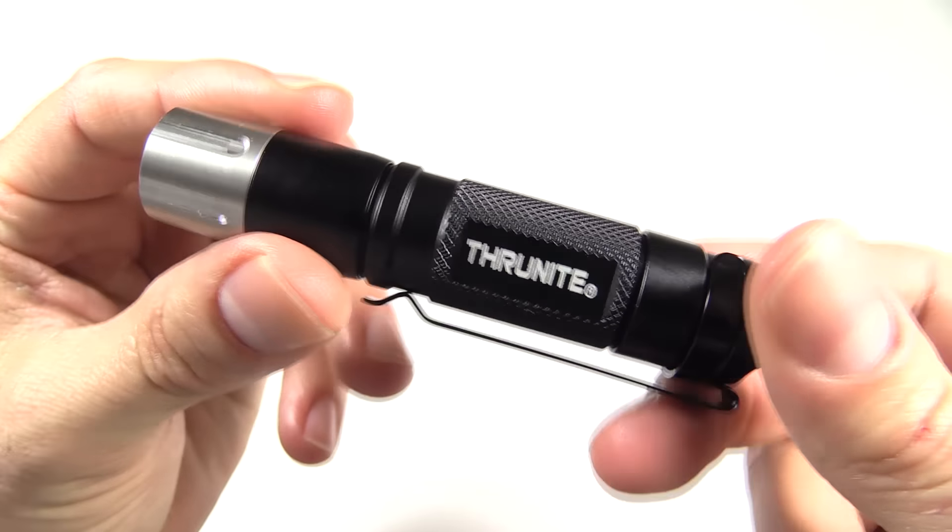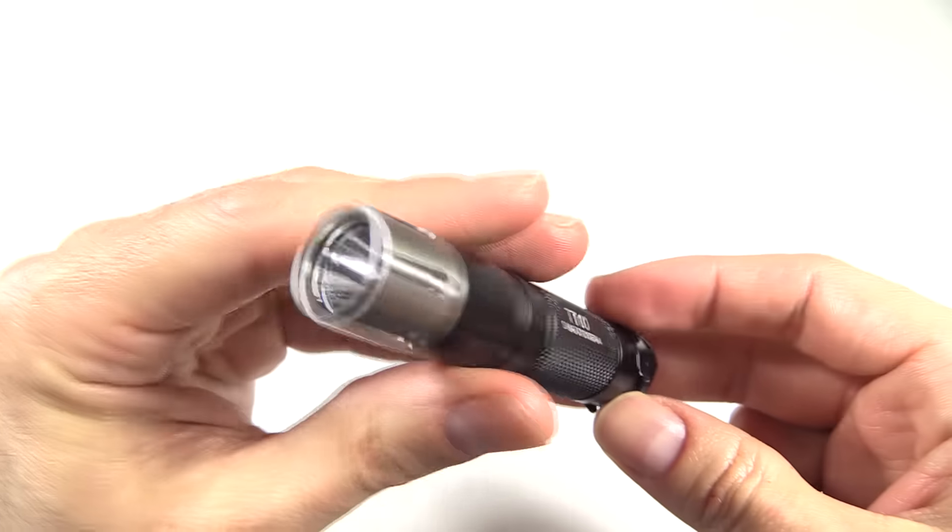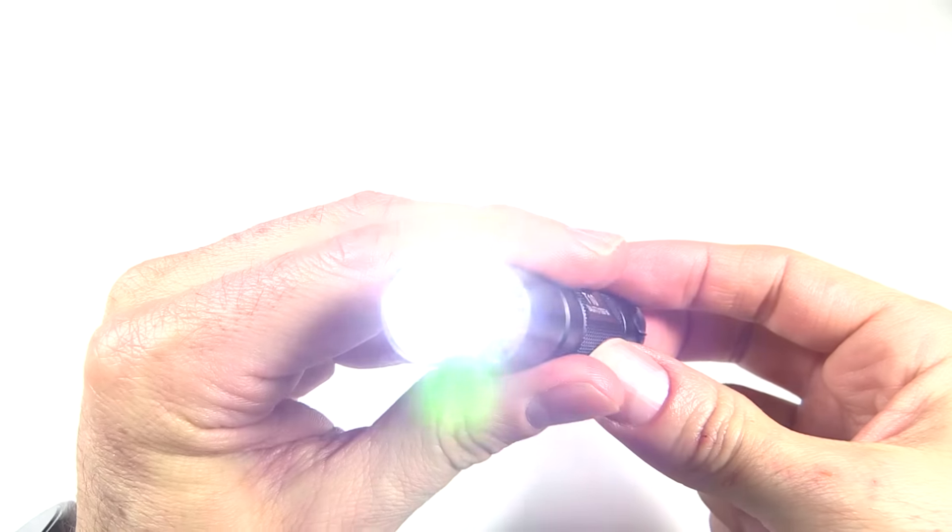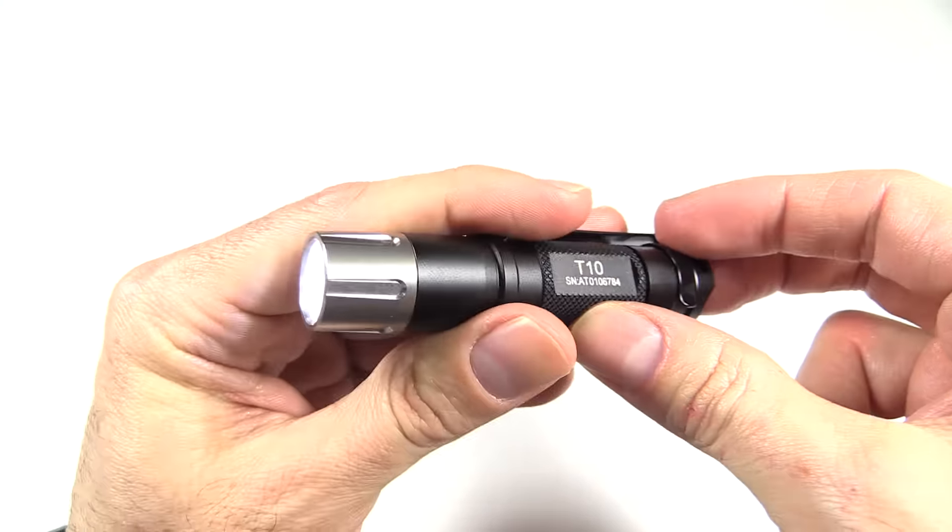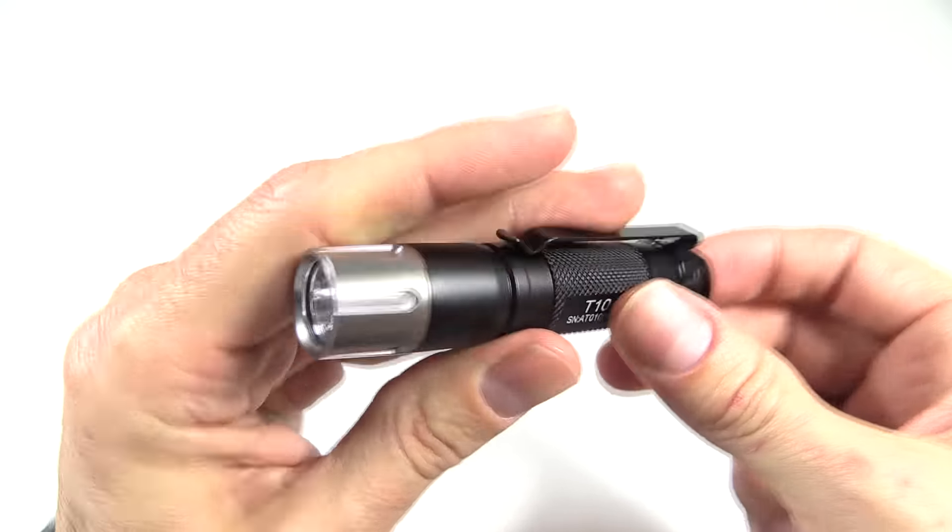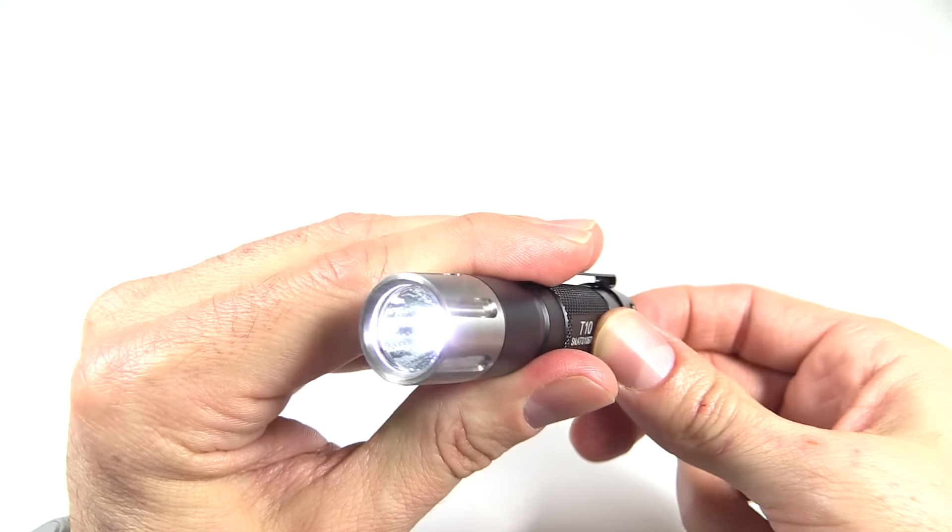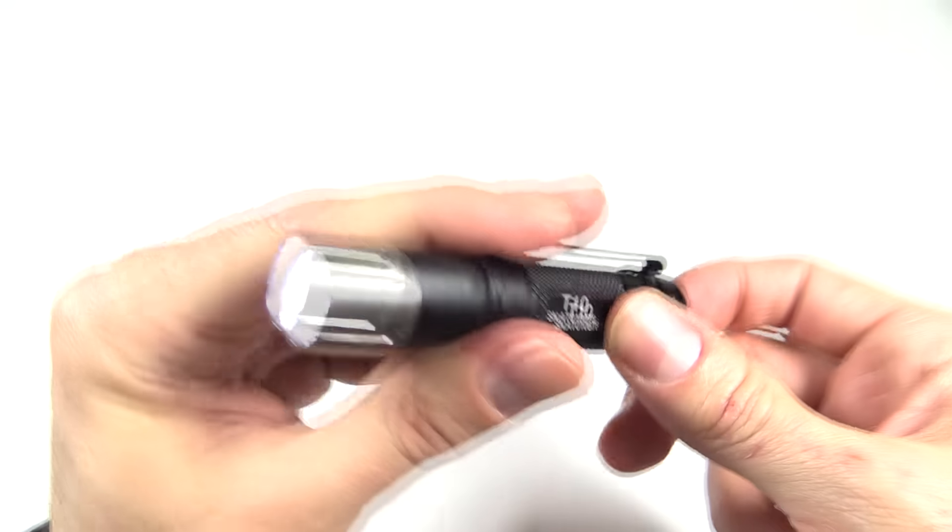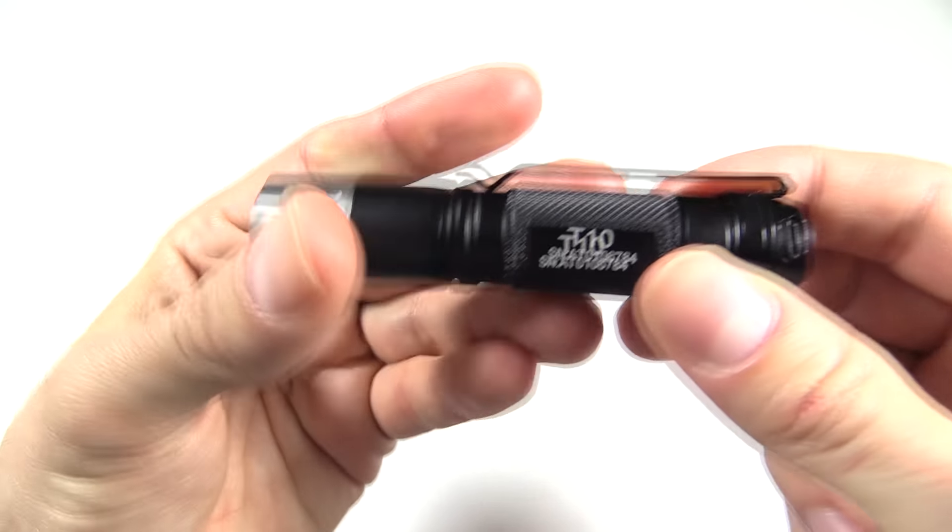So that's it, the ThruNight T10, updated for 2016 with this reverse click design. It is a great everyday carry light, not going to be a tactical light by any means, but with the size, single AA, a decent amount of output at 252 lumens, this is going to be a great everyday carry light.